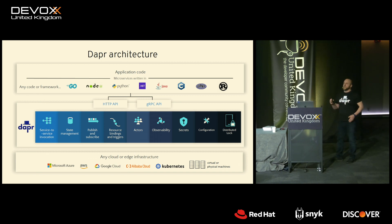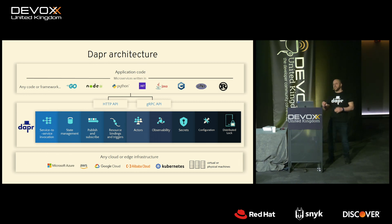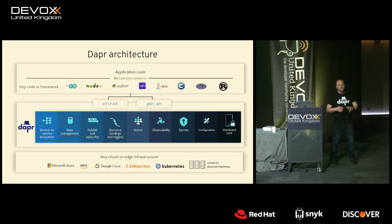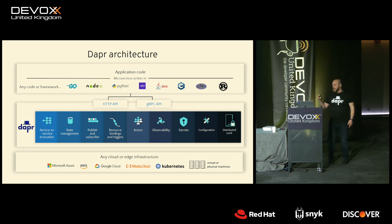What DAPR does differently is that rather than offering these capabilities as a library you include in your application, it runs as a separate process next to your application. From your application, you interact with DAPR over its HTTP or gRPC APIs. For example, DAPR has a service-to-service invocation API similar to a proxy with service discovery, a state store API similar to Redis's key-value access API, a publish-subscribe API similar to Kafka's PubSub API, and so on. You interact with these APIs from your application over HTTP or gRPC.